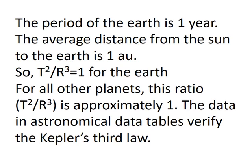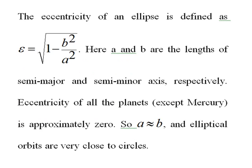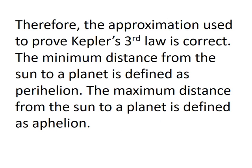Astronomical data tables verify Kepler's third law. The eccentricity epsilon of an ellipse is defined as epsilon equals the square root of 1 minus b²/a², where a is the length of the semi-major axis and b is the length of the semi-minor axis. The eccentricity of all planets except Mercury is approximately zero, so a is approximately equal to b and elliptical orbits are very close to circles, confirming the approximation used in the proof. The minimum distance from the sun to a planet is called perihelion, and the maximum distance is called aphelion, both measured along the major axis of the ellipse.